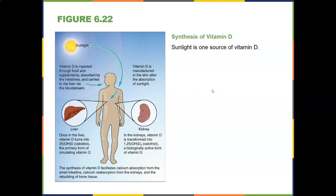Vitamin D is important for preventing fractures. It comes from sunlight and food or supplements. Absorbed through the intestines, it's carried to the liver where it becomes 25-OH-calcitriol — the primary circulating form. In the kidneys it's converted to 1,25-calcitriol, the biologically active form. The liver and kidneys play a huge role in vitamin D synthesis, which facilitates calcium absorption from the small intestine, calcium reabsorption from the kidneys, and rebuilding of bone tissue.